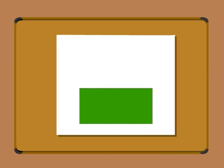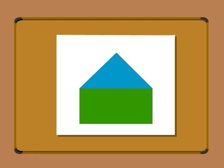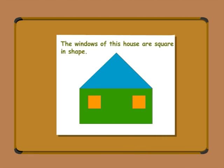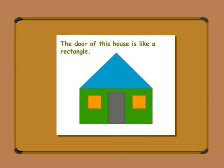You must have noticed that the roof of a cottage is often like a triangle. So, I will use a triangle for the roof. We will use squares for windows, as the windows of some houses are square in shape. We will use a rectangle for the door.